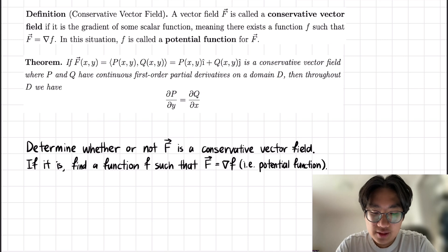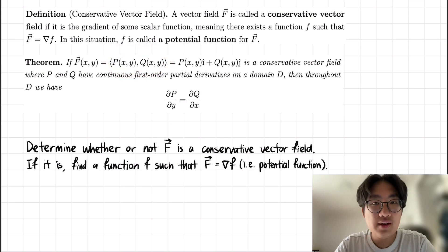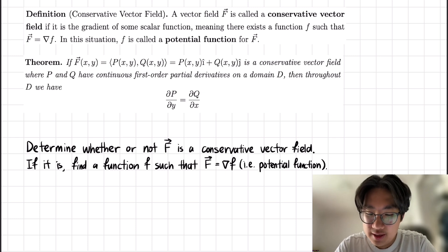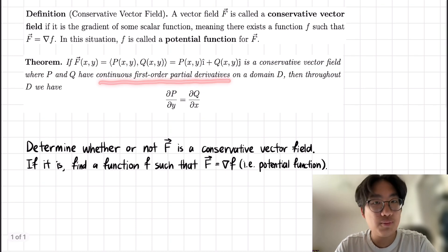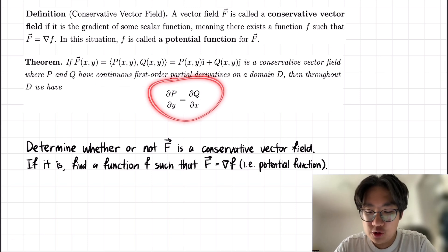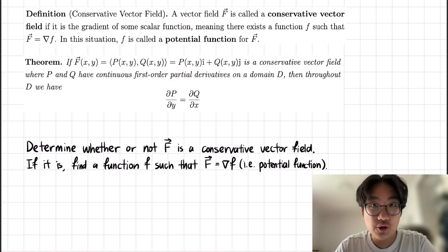We also have a theorem. If F of xy, our vector field, is equal to P of xy and Q of xy, and if that is a conservative vector field where P and Q have continuous first-order partial derivatives on a domain D, then throughout the domain D we have that partial P partial y is equal to partial Q partial x.